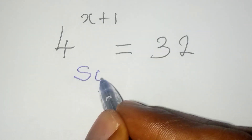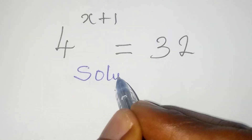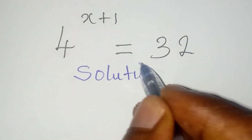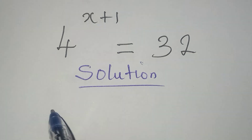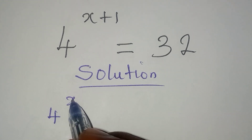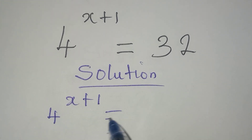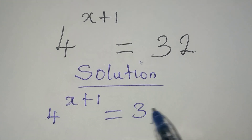Hi everyone, let's solve this exponential equation. We have 4 to the power of x plus 1 equal to 32.